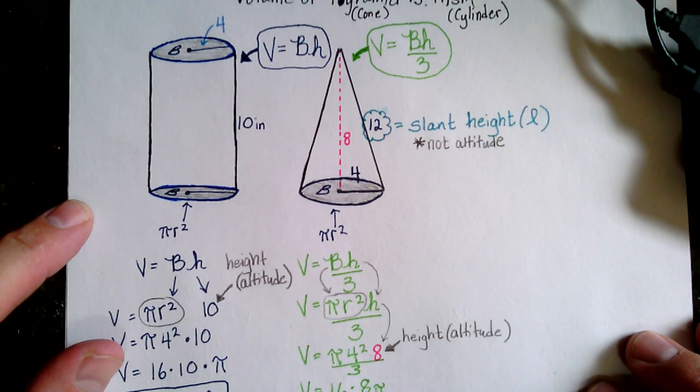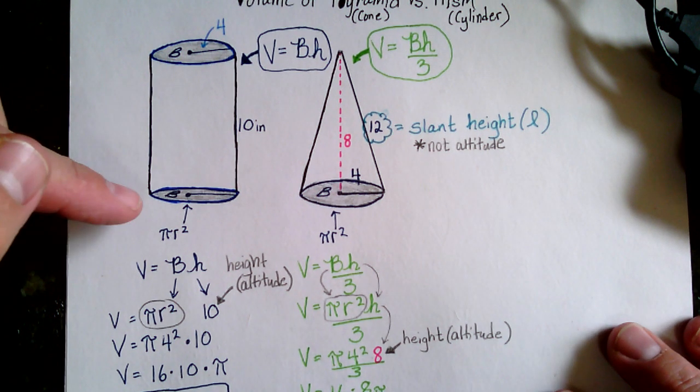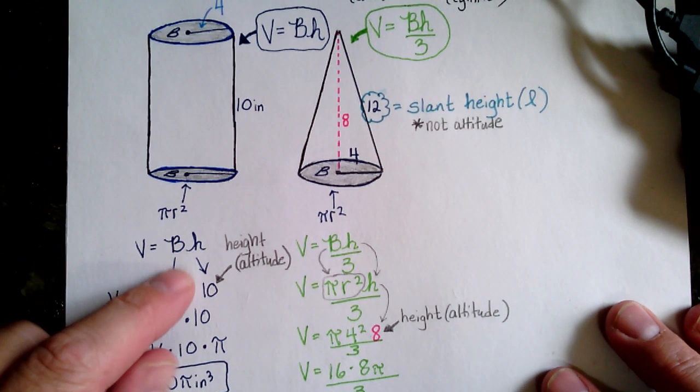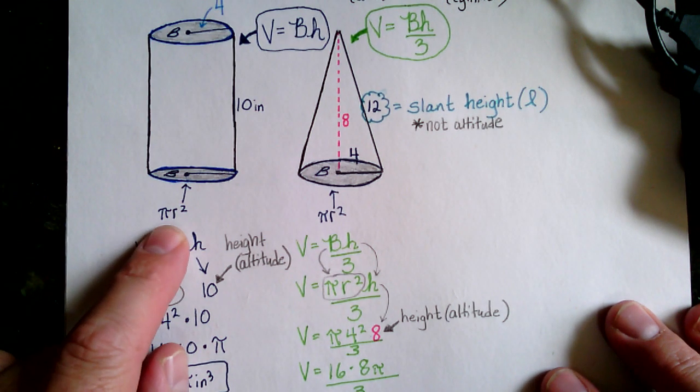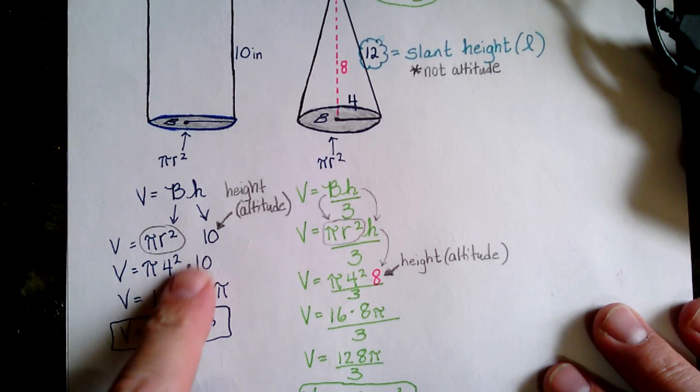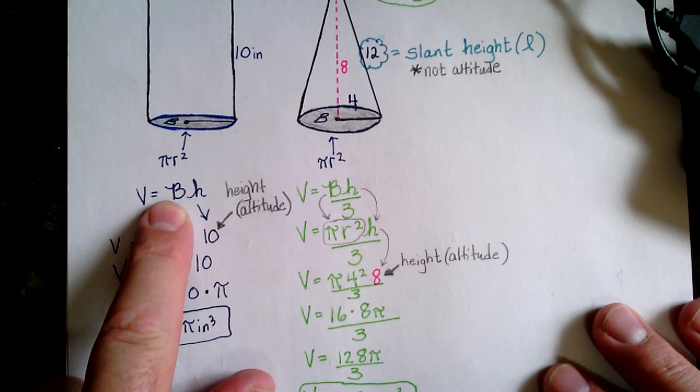So let's just go back and recap what we're doing here. The important parts for this: identify the base as a circle. Formula for the area of that circle is pi r squared. So the area of the base times the height.